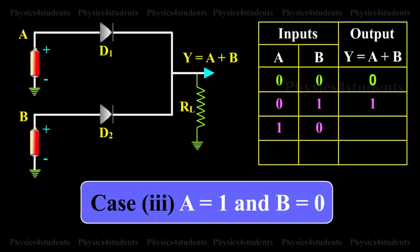Case 3: A is equal to 1 and B is equal to 0. When A is high and B is low, diode D1 conducts and the output is high.